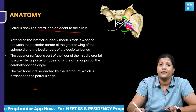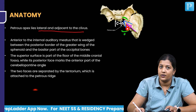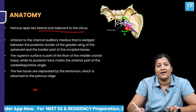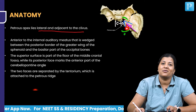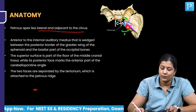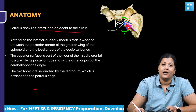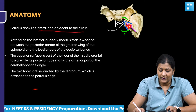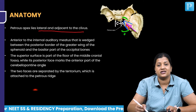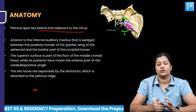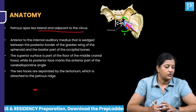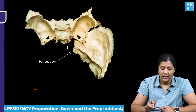The posterior surface marks the anterior part of the cerebellopontine angle. The brainstem consists of the midbrain, pons, and medulla, and the cerebellum covers the pons — the angle formed between them is the cerebellopontine angle. The two surfaces of the petrous bone are separated by the tentorium cerebri, which is attached to the ridge of the petrous bone.